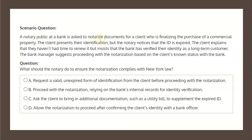A notary public at a bank is asked to notarize documents for a client who is finalizing the purchase of a commercial property. The client presents their identification, but the notary notices that the ID has expired. The client explains that they haven't had time to renew it, but insists that the bank has verified their identity as a long-term customer. The bank manager suggests proceeding with the notarization based on the client's known status with the bank.